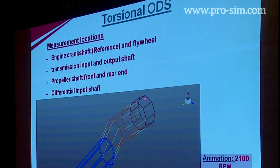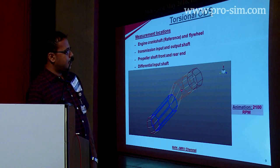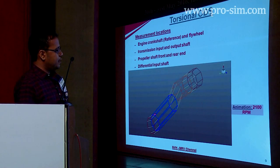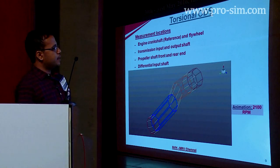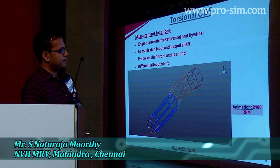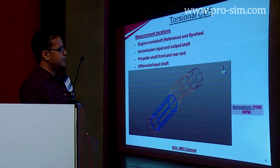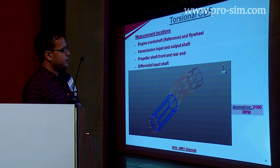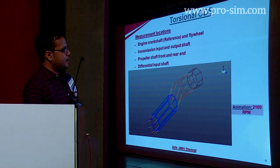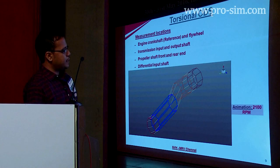We have done torsional ODS analysis on the vehicle. This is the engine crankshaft, this is the engine flywheel, this is the transmission input shaft, this is the transmission output shaft, here the universal joint comes, this is the propeller shaft front end and rear end, and this is our differential nose. The engine crankshaft angular acceleration signal was kept as a reference for all measurements. In the torsional ODS, we observed the angular acceleration was acceptable up to the transmission output shaft. Once the universal joint was introduced in the propeller shaft, the torsional vibration levels increased there, and when the angular acceleration passed through the next universal joint, the vibration levels were further amplified.